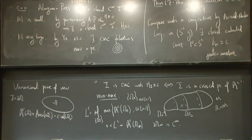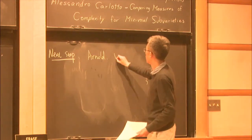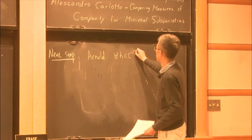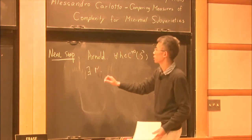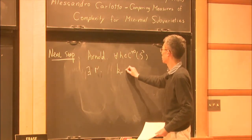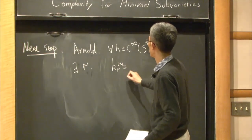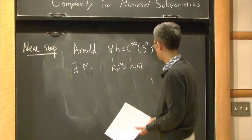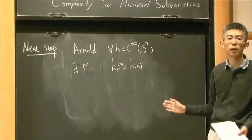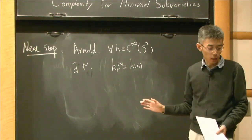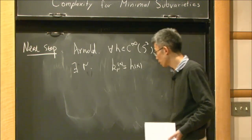Arnold also conjectured that for any smooth function on S2, there exists a smooth, closed embedded curve whose geodesic curvature at each point on the curve equals the value of this function.